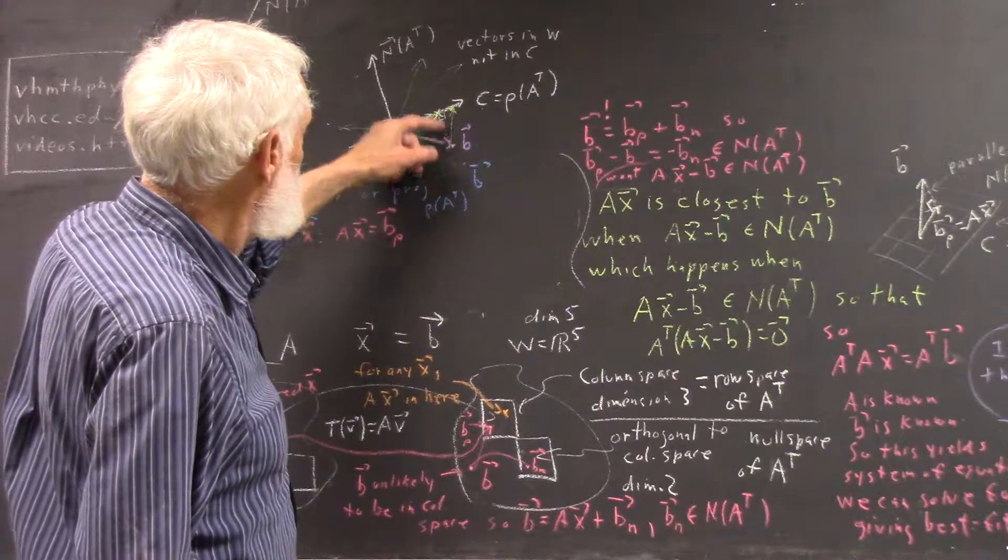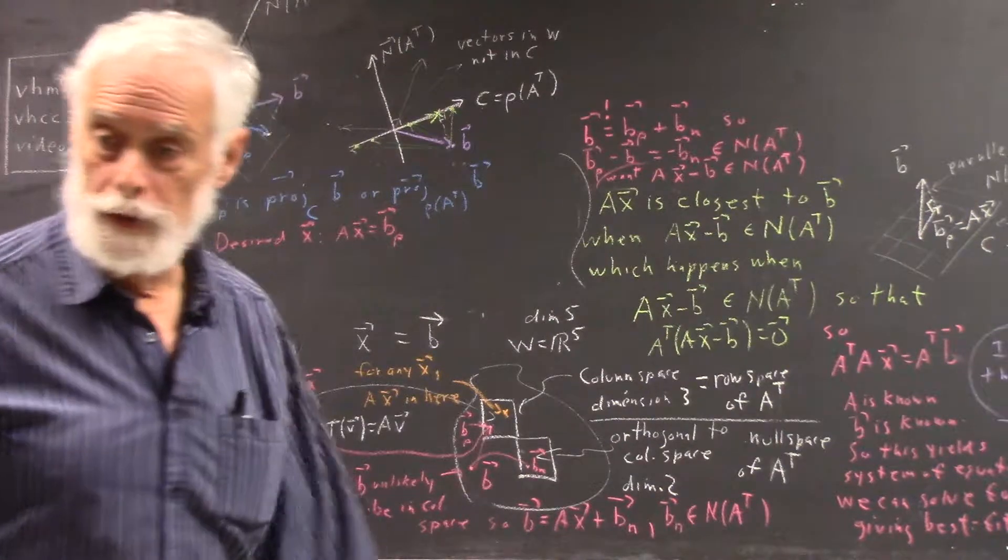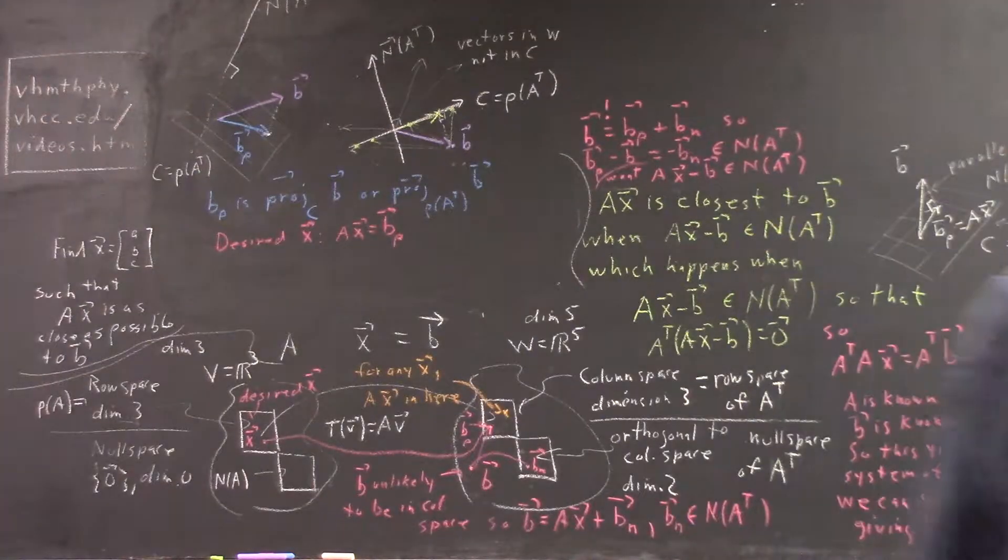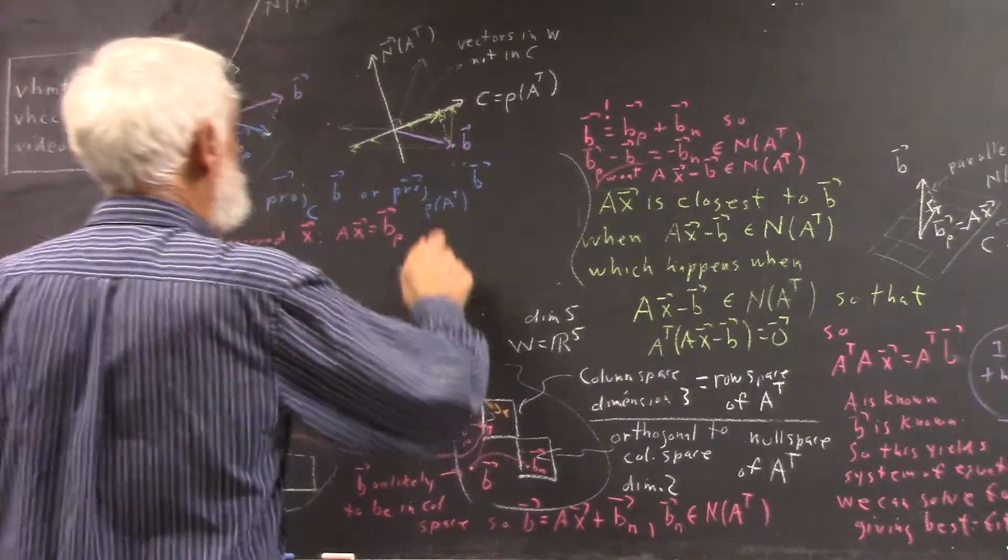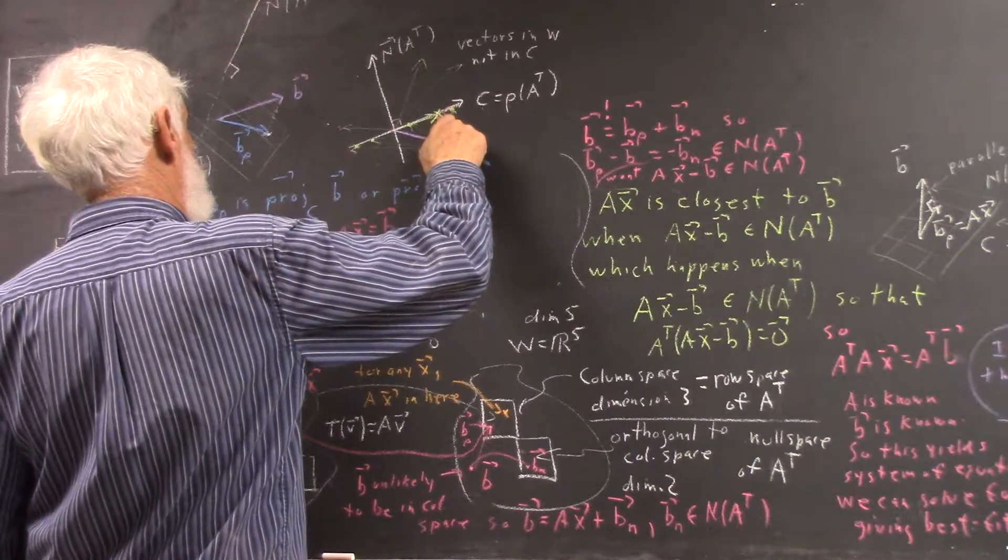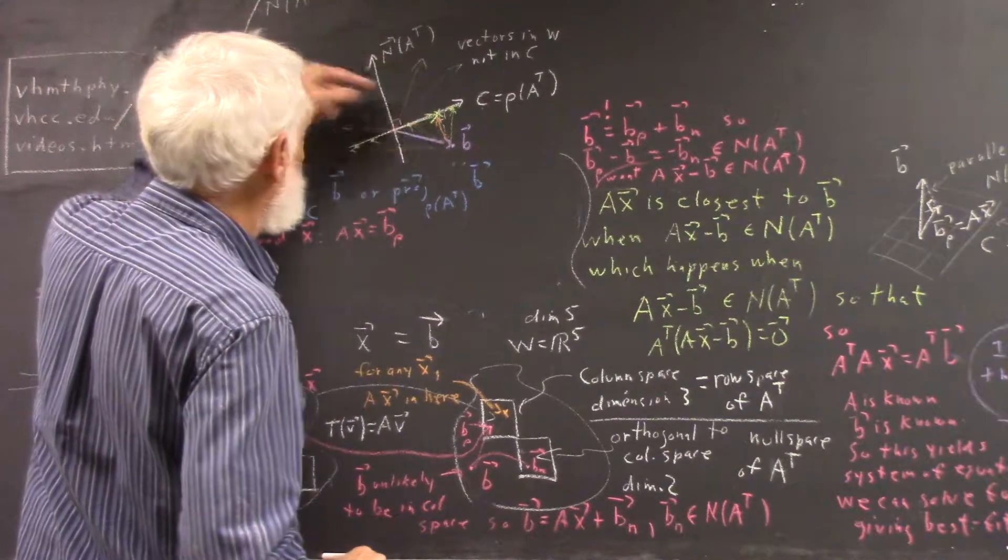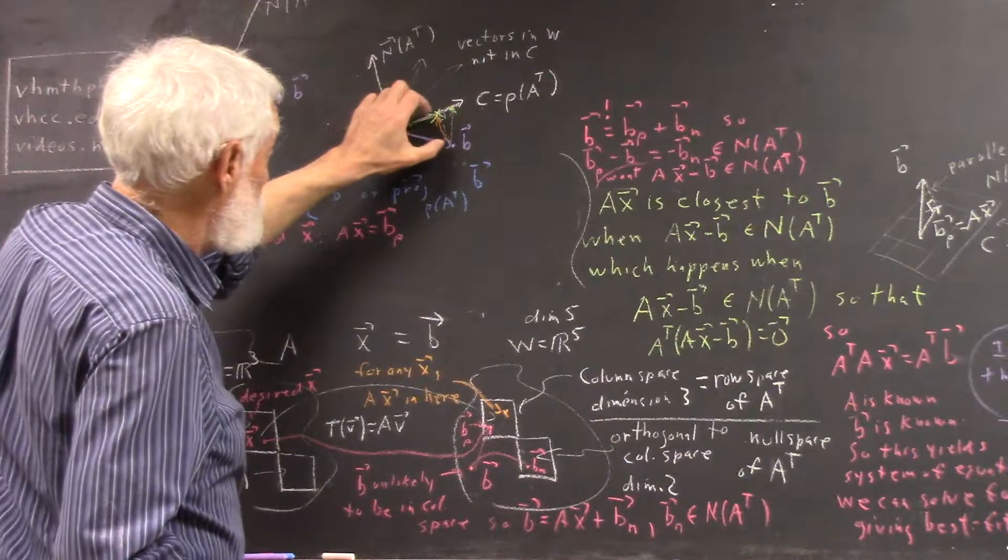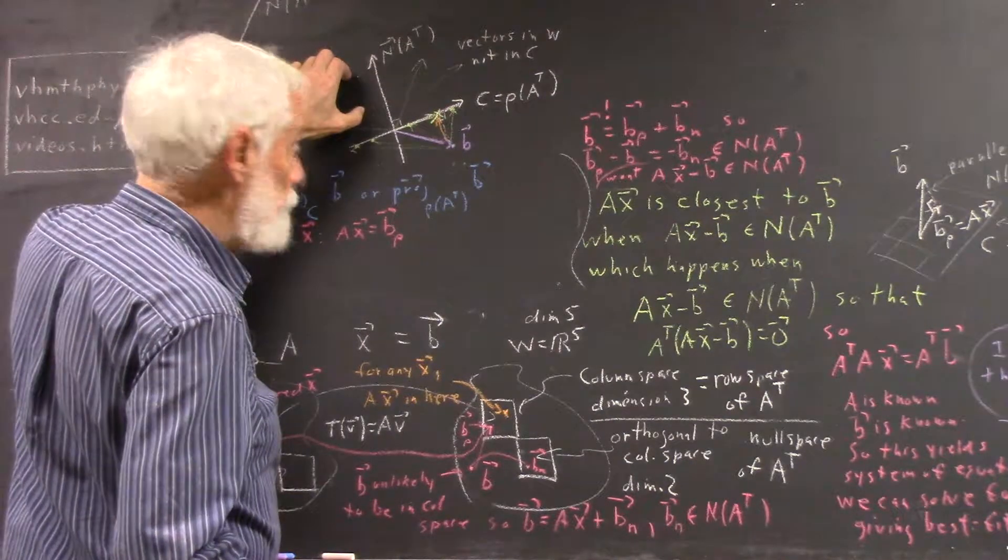Now, this projection line, and we could make this another vector if I had another color handy, constitutes a vector, if you will, that's in the null space. This vector is parallel to the null space, so it's a member of the null space.